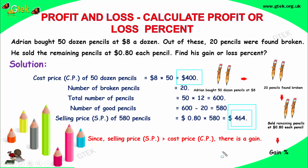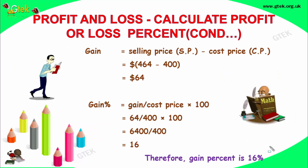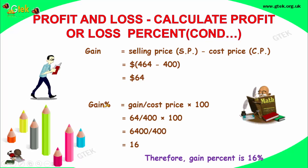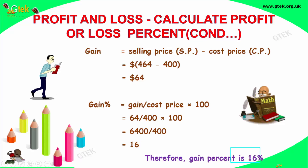Is it a gain or a loss? This is a gain because he got 64 dollars extra — the selling price is greater than the cost price. So 464 minus 400, the gain equals selling price minus cost price, which is 64 dollars. The gain percentage formula is: gain divided by cost price into 100. So 64 divided by 400 into 100 gives us 16. The gain percentage is 16 percent.